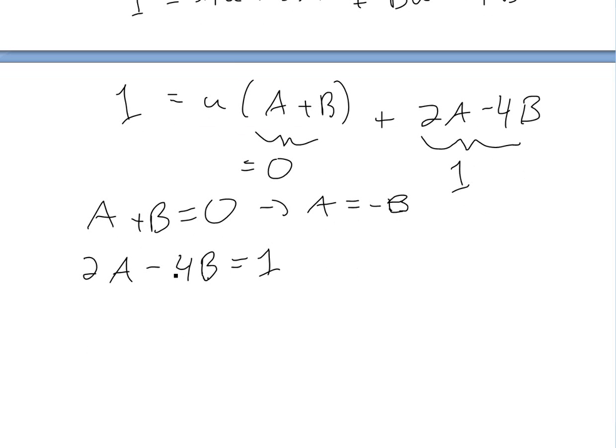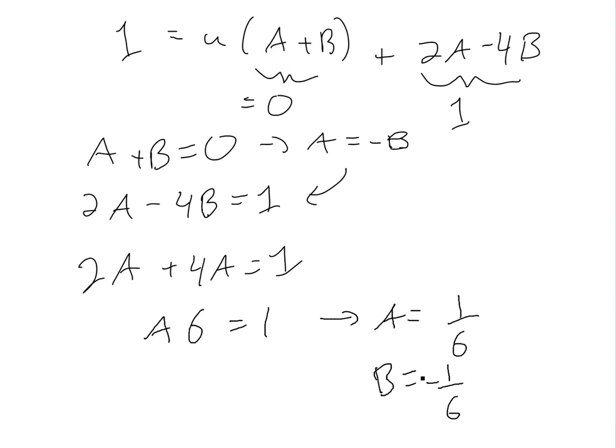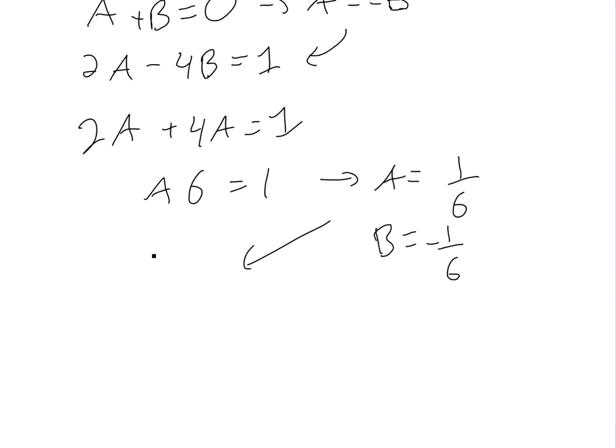And then from this, we're just going to plug this back in here. We're going to have 2A plus 4A equals 1, because we plug this back in there. Now we're going to have 6A equals 1, or A equals 1 over 6, and likewise B is going to be equal to negative 1 over 6.